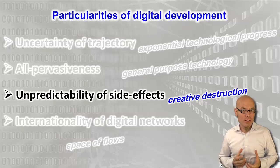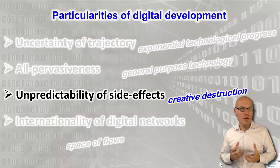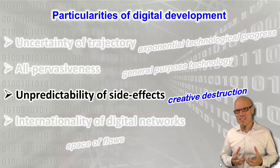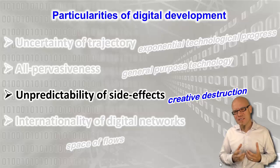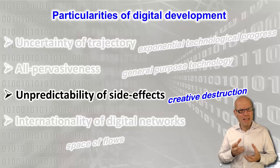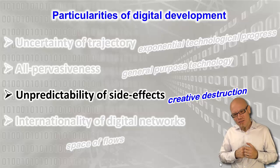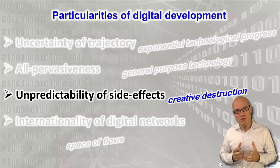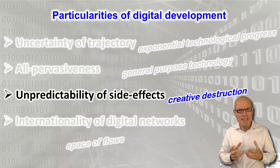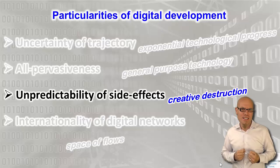Third, the digital revolution has to do with creative destruction — it creates and destroys. And once creative destruction happens in such a complex ecosystem, like social systems, it is often almost impossible to predict all the side effects because there are so many interdependencies and interactivities.